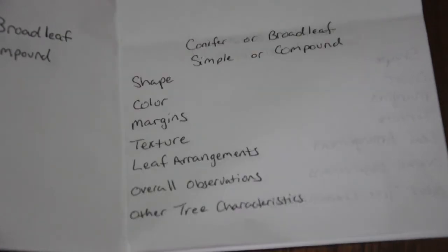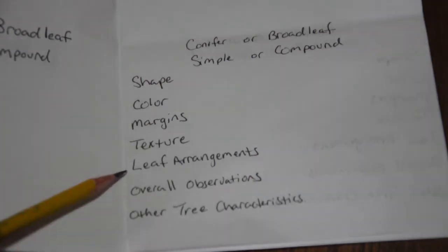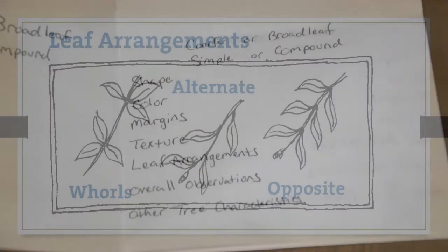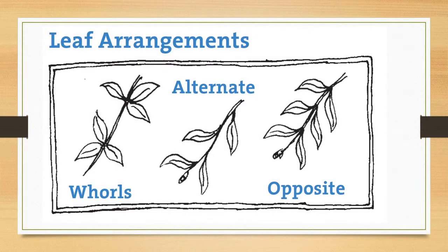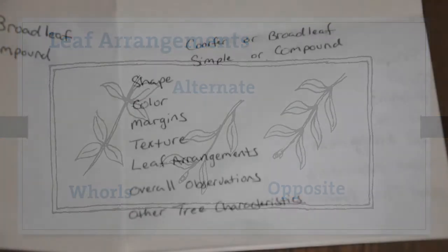Another characteristic to identify a tree is the way its leaves are arranged on the twig. Many trees have alternate leaves that are staggered along the twig. Other trees have opposite leaves that grow in pairs along the twig. And some leaves grow in whorls. The leaves on pines, spruces, firs, and other needle-leaf trees also grow in patterns — for example, leaves on pines may grow in clusters of two, three, or more.